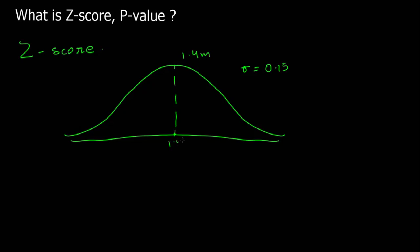So 1.4 meters, then 0.15 meters to the right is 1.55. Similarly to the left, 1.25, which is one standard deviation away from the mean. So if you remember, we discussed that 68% of the students are falling between one standard deviation away from the mean, 1.25 meters to 1.55 meters.